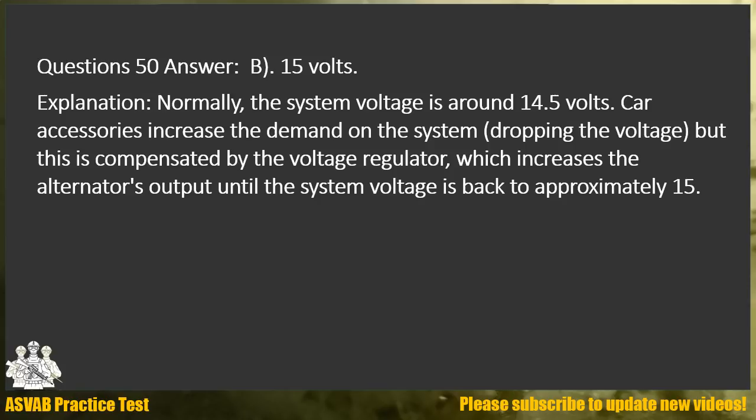Question 50. Answer B. 15 volts. Explanation: Normally the system voltage is around 14.5 volts. Car accessories increase the demand on the system, dropping the voltage, but this is compensated by the voltage regulator, which increases the alternator's output until the system voltage is back to approximately 15 volts.